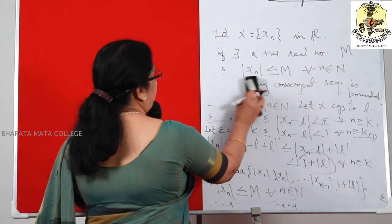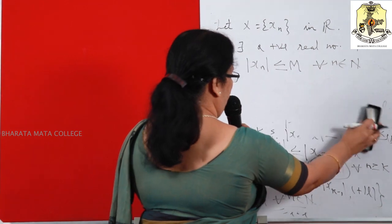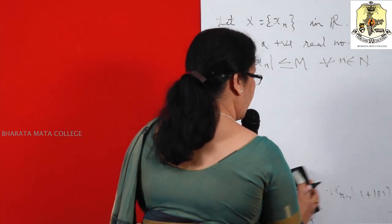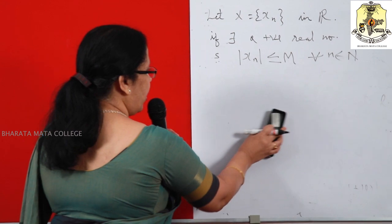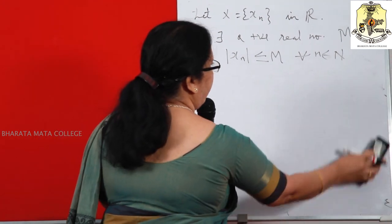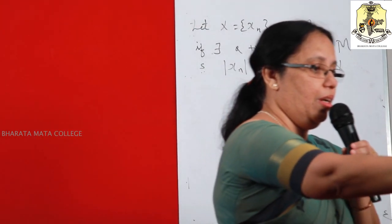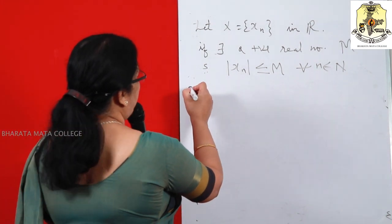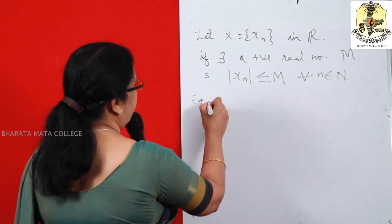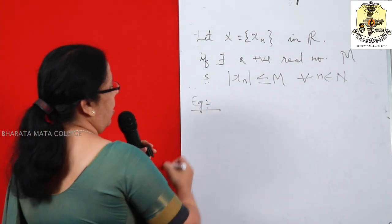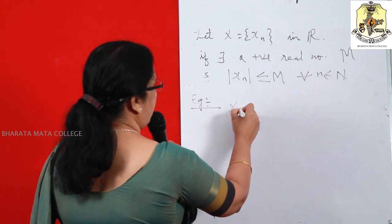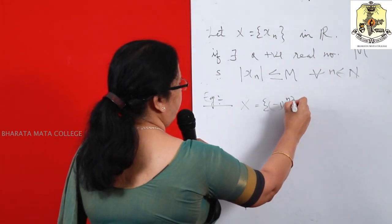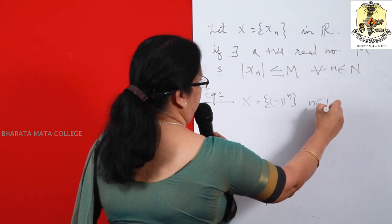Now the converse of this theorem is not true, which means every convergent sequence is bounded, but a bounded sequence need not be convergent. Let us see one example. Consider the sequence X = {(-1)^N}, N belonging to N.